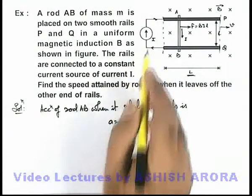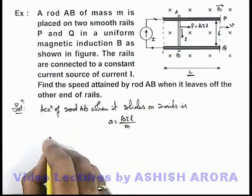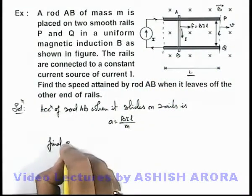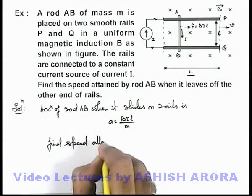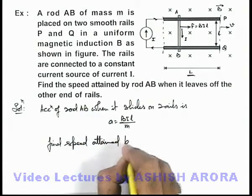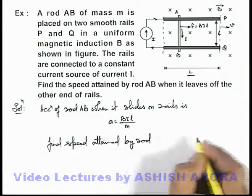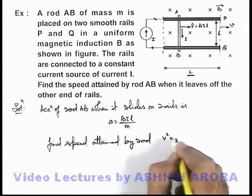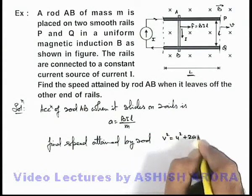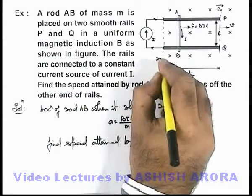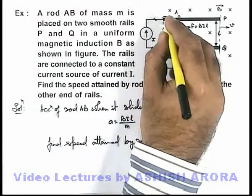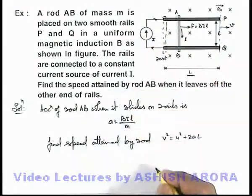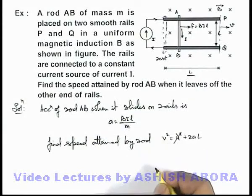Now after travelling a distance L, we can write final speed attained by rod. This can directly be given as v² = u² + 2aL, and as initially the rod was starting from rest from the initial stage, so u can be written as zero.